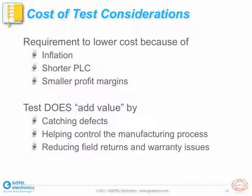Test also helps us control the manufacturing process by identifying trends. For example, the placement of wrong components could indicate that the wrong component reel has been loaded into the placement machine, or bad solder joints could indicate problems with the screen printing process or with the reflow soldering equipment. And tests can add value by reducing the number of field returns and warranty issues we have to deal with because of bad products slipping through to end users.